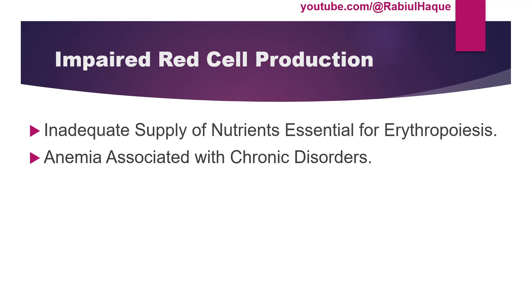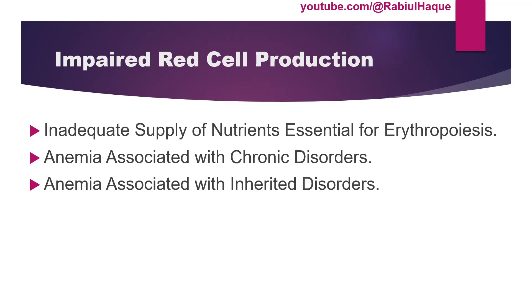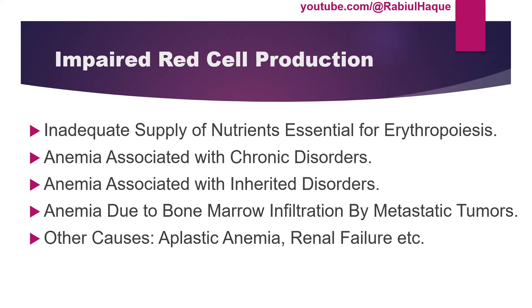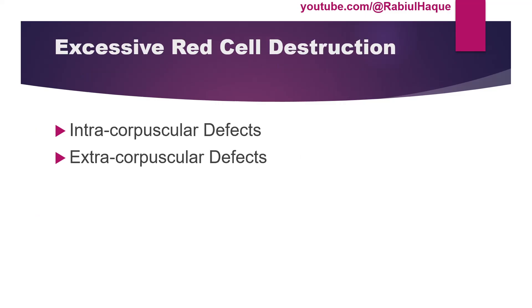Anemia can also occur in certain inherited disorders like thalassemia and hemoglobinopathies, which will be discussed in detail in separate lectures. It can also occur due to bone marrow infiltration by metastatic tumor, with causes including leukemia, lymphoma, myeloproliferative disorders, and myelodysplastic disorders. Anemia can also occur in renal failure and aplastic anemia. Lastly, anemia can occur due to excessive red cell destruction caused by intracorpuscular or extracorpuscular defects, as will be covered in later lectures.